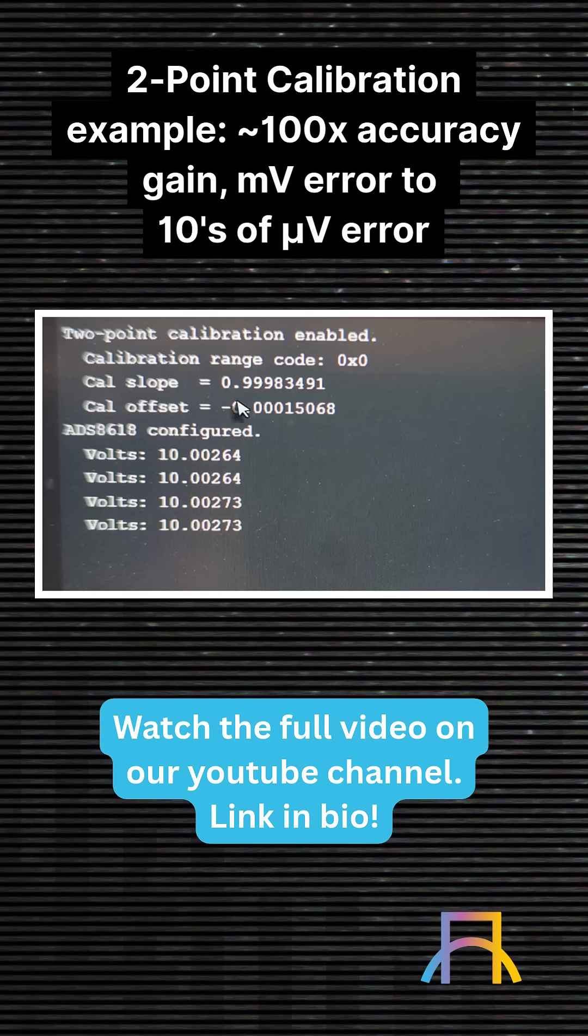We're using that point-slope-intercept formula with these values to get these readings that you're seeing. And remember, what the voltmeter was reading - it was reading 10.0027 volts. So now that's approximately what we're seeing here.